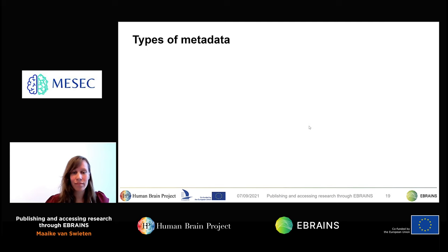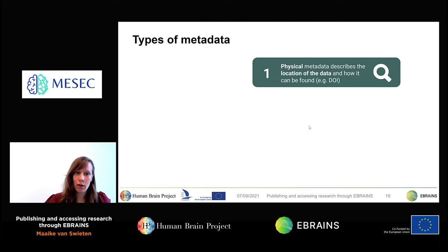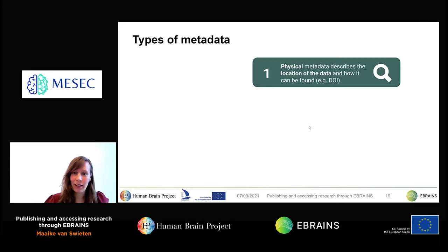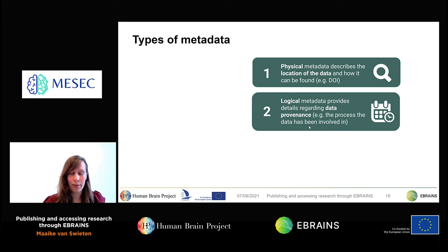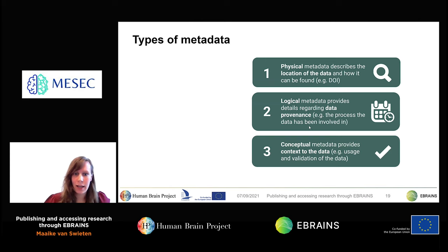Metadata can be any type of information, but it typically falls within three categories. Physical metadata describes the location of data and how it can be found — such as a DOI for online material or a shelf number in a library. Logical metadata provides details regarding the data governance or provenance of the dataset, describing how data was generated from a subject through to a data file, including all methods and techniques applied. Conceptual metadata provides context to the data — for example, how data was validated and which software is required to open and use it.